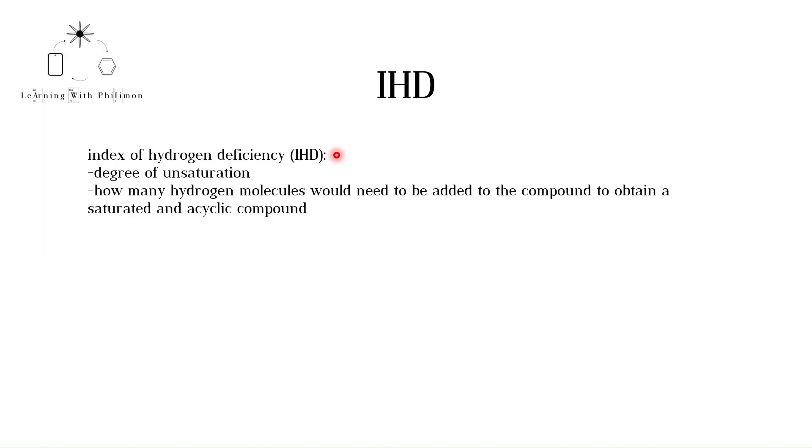Using a technique called elemental analysis, we can determine the mass of each element in a compound. This allows us to calculate the empirical formula. For more on this, please watch the video Empirical and Molecular Formulae. With the empirical formula, we can calculate the Index of Hydrogen Deficiency, or IHD, of the compound.